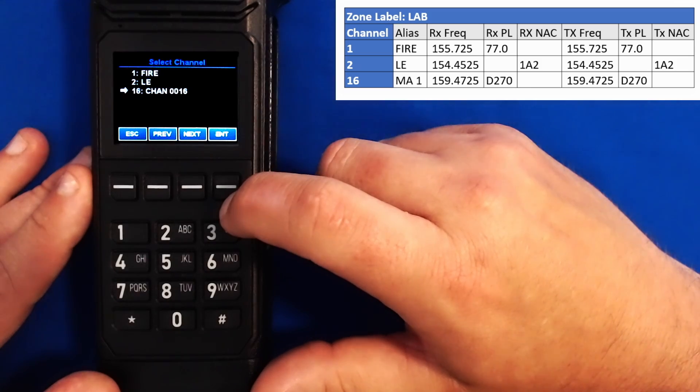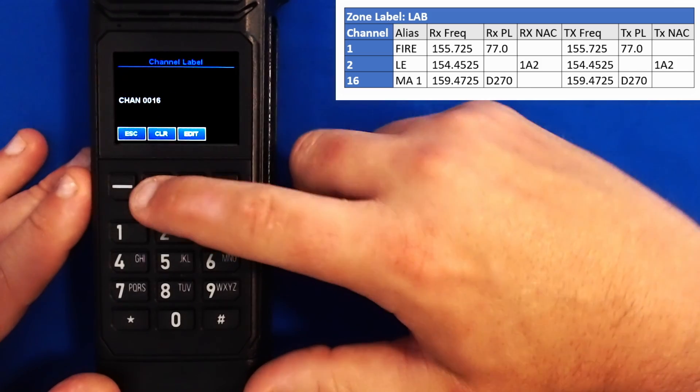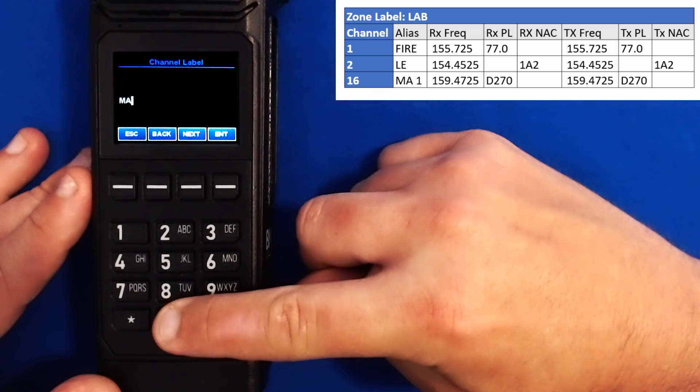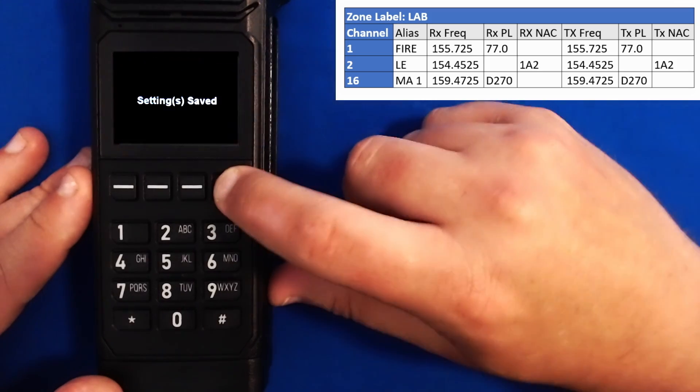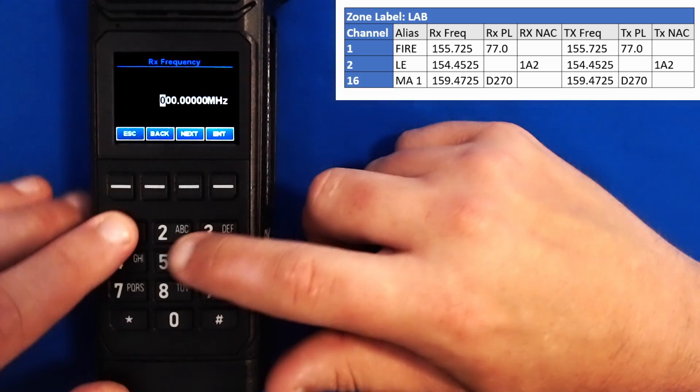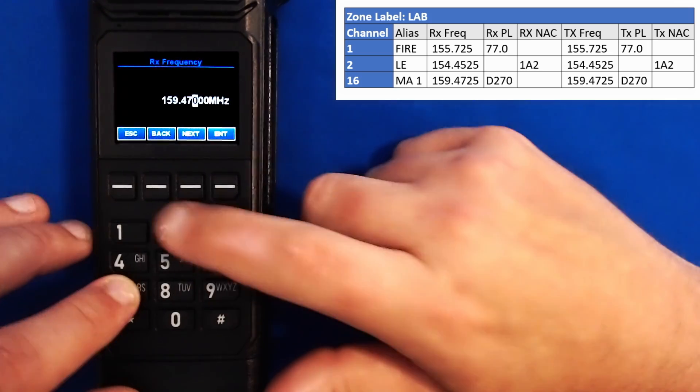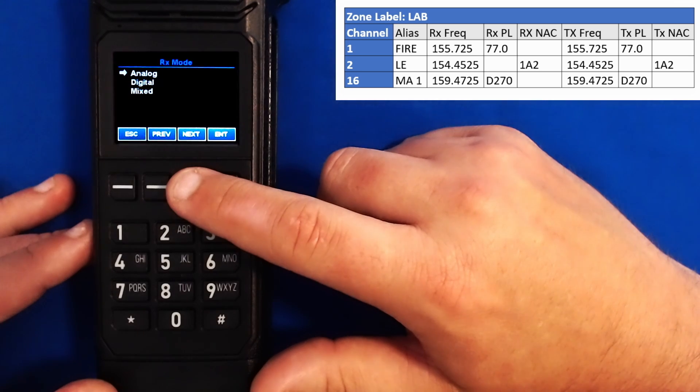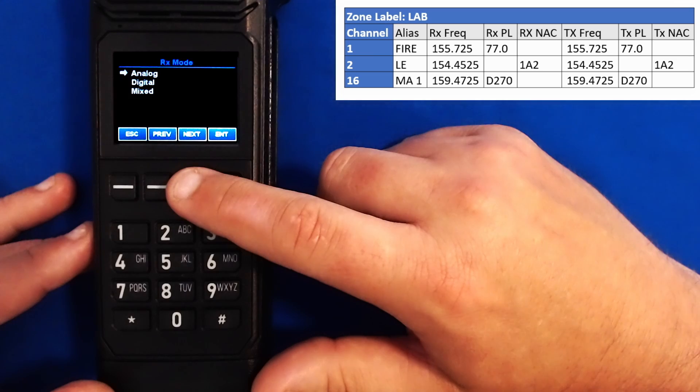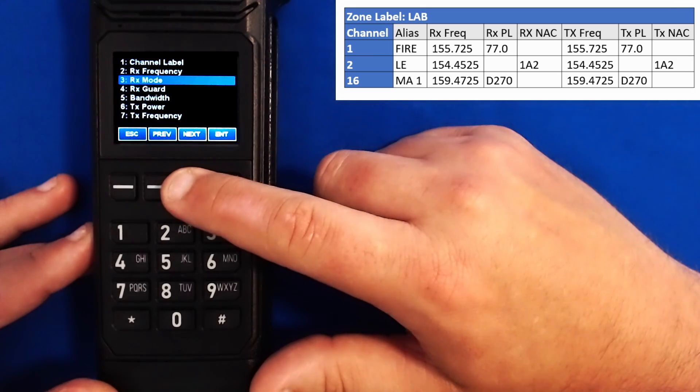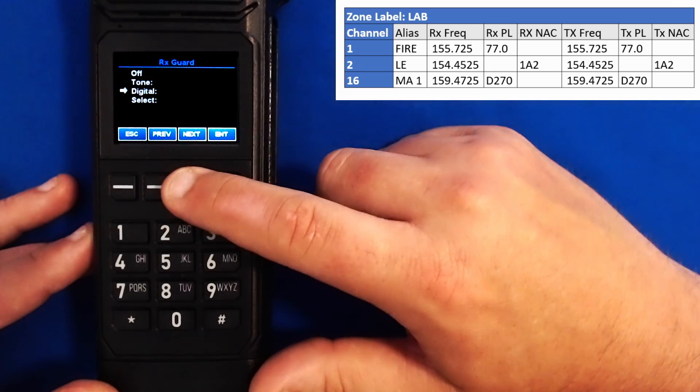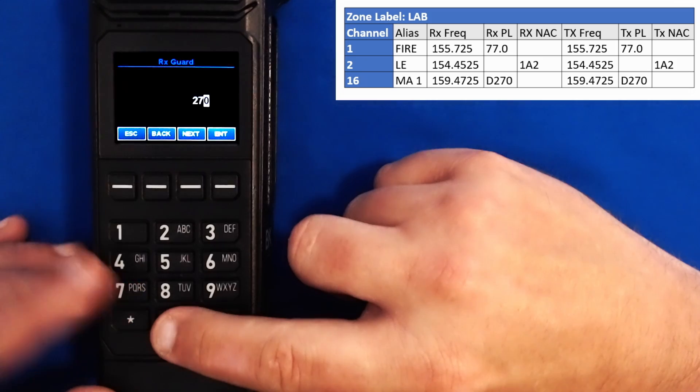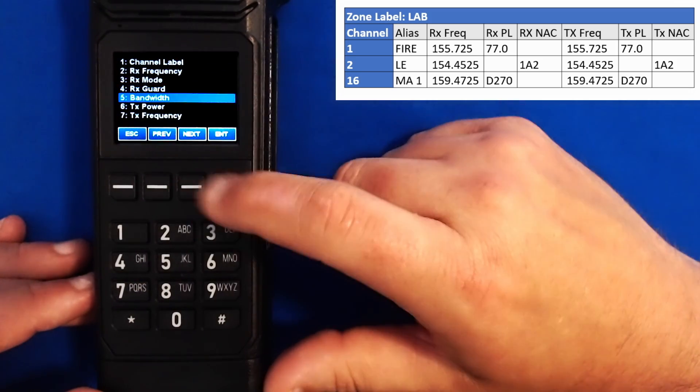Go down to channel 16 and program our last channel of the day. I'll go to my channel label, hit clear, and then I will use my 0 key to get a space, and then the number 1. Go to our frequency. Clear. 159472. We'll go to receive mode. Here, you notice that I have a PL tone, even though it's a DPL or digital PL tone. So just because I have a PL tone, that also means I'm in analog mode, even though it's a DPL. And when I go down to my guard here, you'll notice that I have digital to select. And then here I have my DPL tone for 270. I'll hit clear and type in 270. Enter. My bandwidth should always be narrow band.